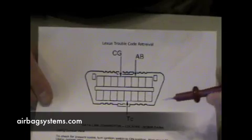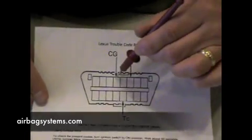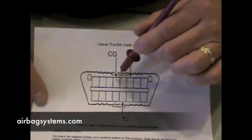Notice on this connector, we've got it marked here, the TC pin and the CG. These are the two you're going to connect to to read the airbag codes.